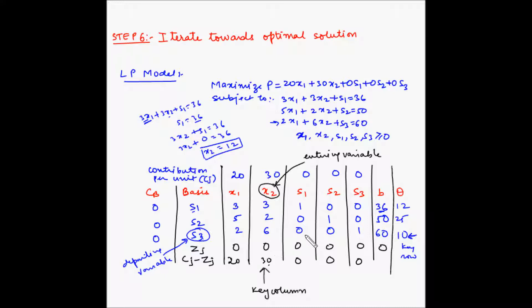We know the key column and the key row, and the intersecting element is known as the key element. After we have selected the key column and the key row, a revised simplex table providing an improved solution can be developed. The first step is that the incoming variable now replaces the departing variable and the coefficient of the incoming variable in the objective function is entered in the CB column.